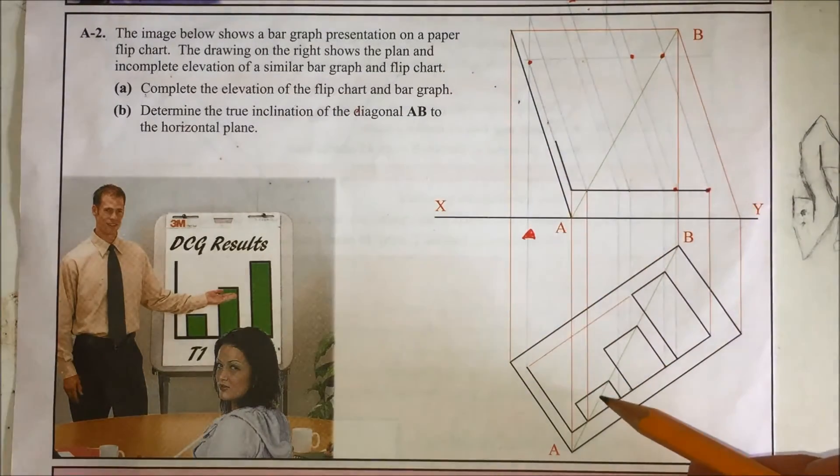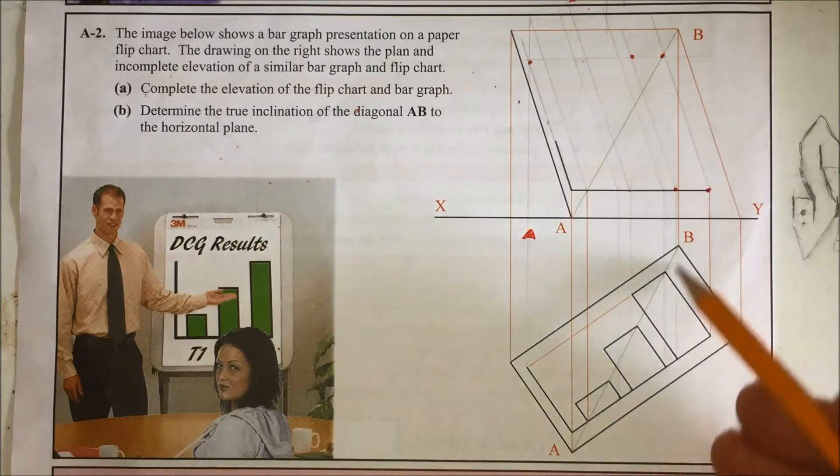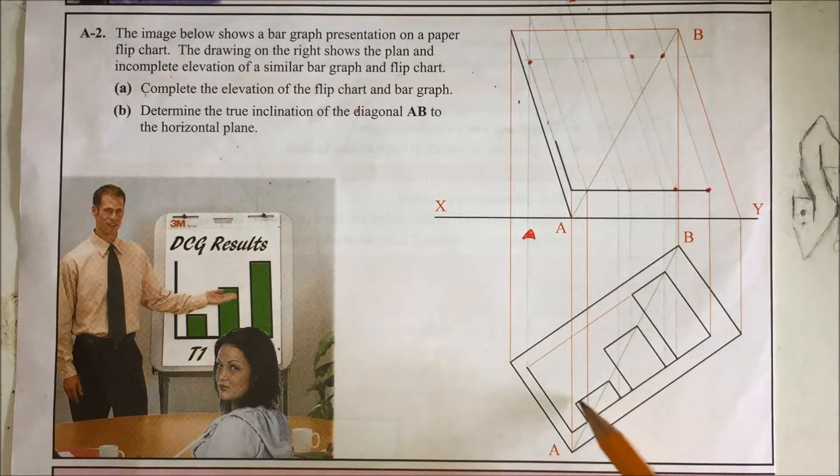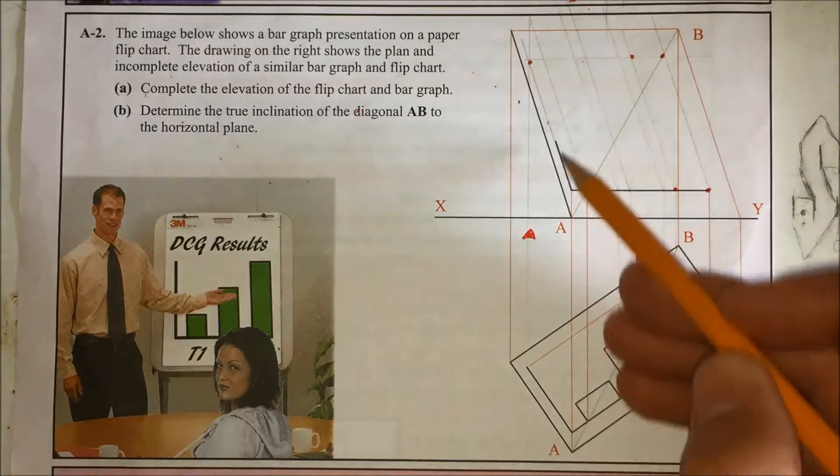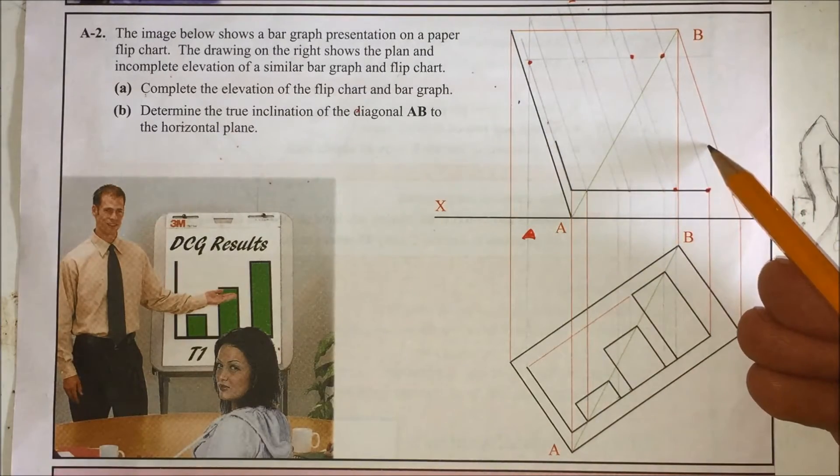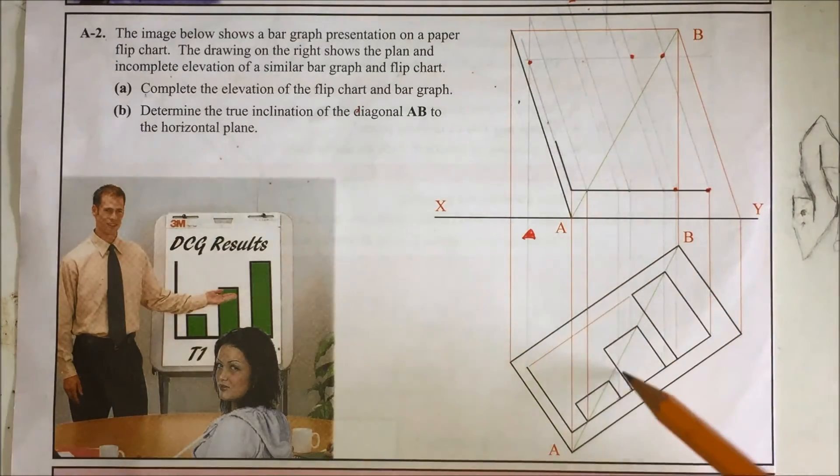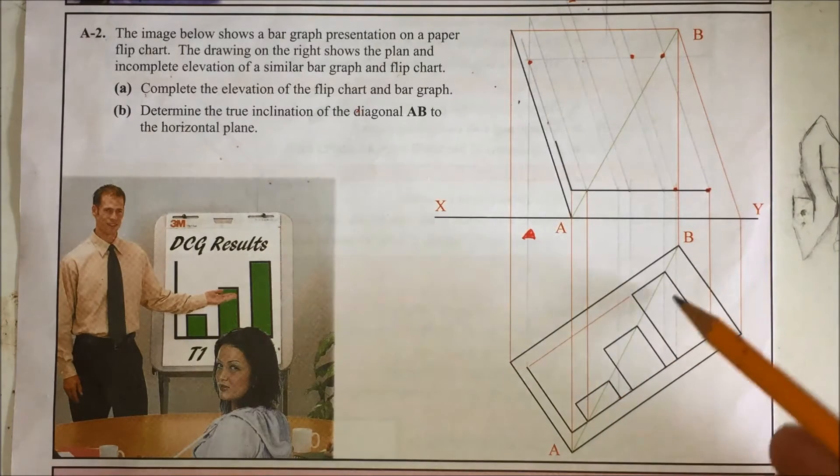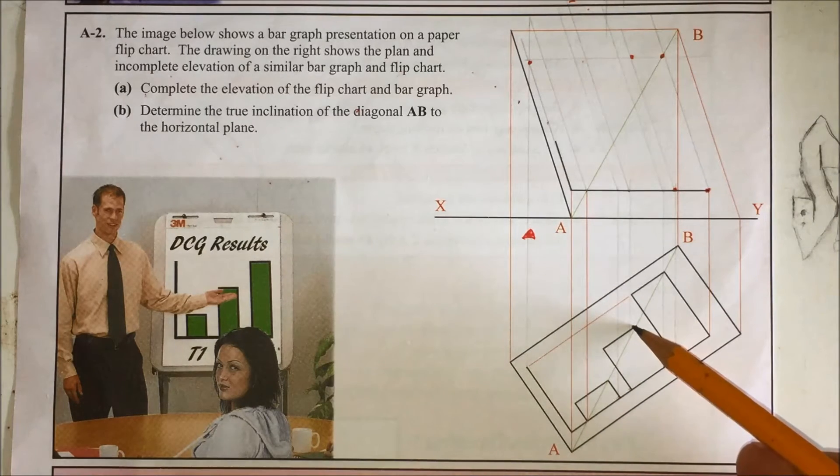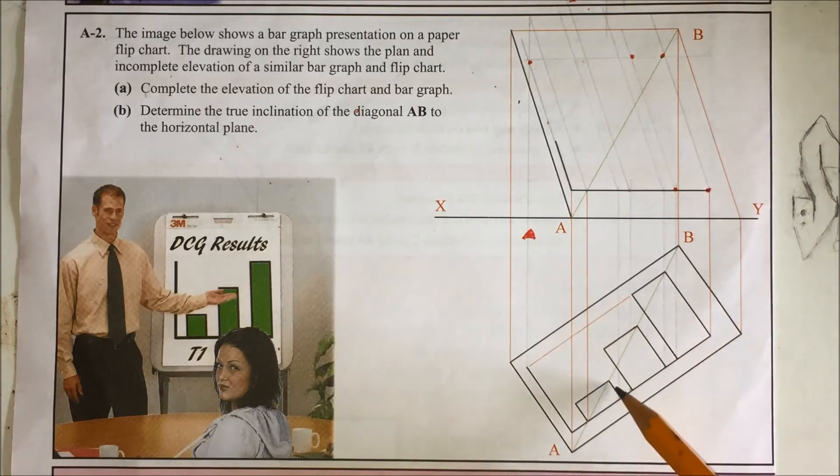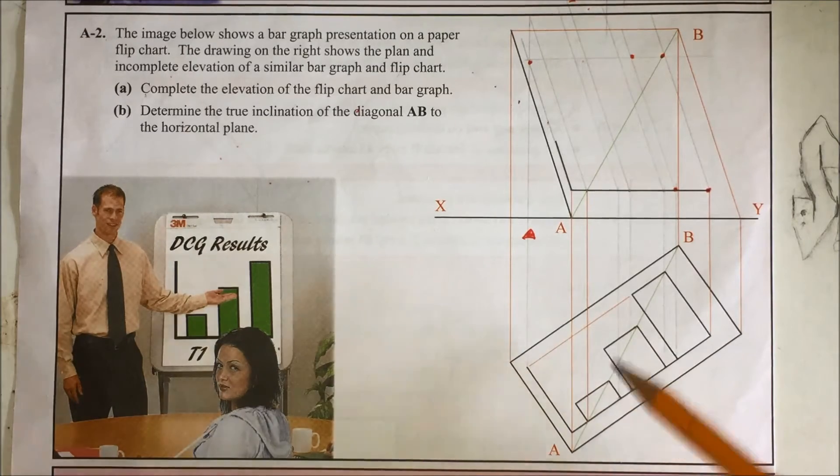So if we bring that up to the diagonal that's giving you your height. Same thing for the right one. Another way, if that diagonal was given, you could bring your height across to the edge here, bring that up to the edge and draw it horizontally across to give your height. In this case they've given you the diagonal giving a lot of information. Again with the plan, let's find that point on this line in elevation. Same thing with that line for this bar chart and that will give you the elevation.